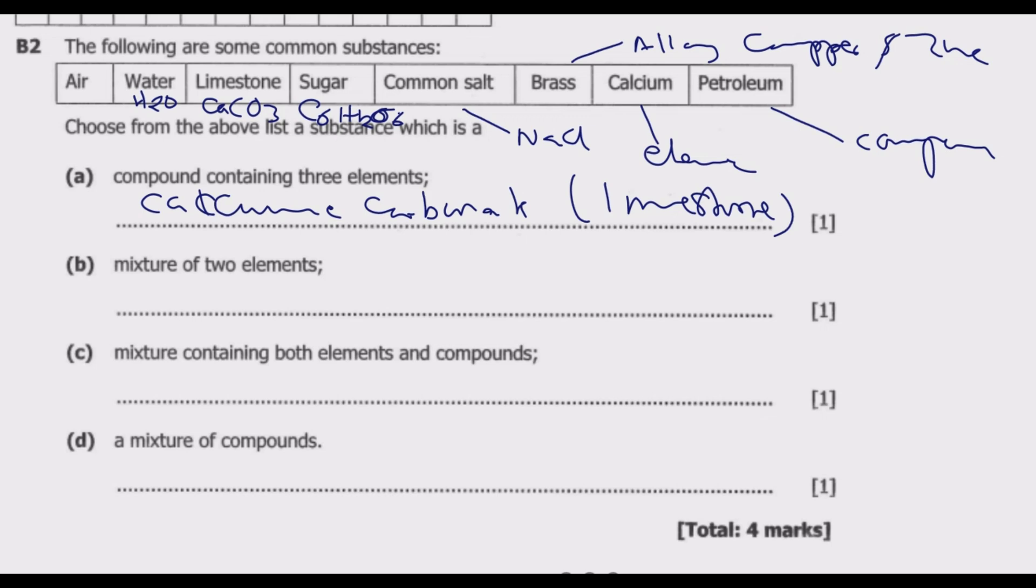We look at the mixture of two elements. So two elements are mixed but they are not chemically bonded. So this one would be basically brass which is an alloy. Remember an alloy is a mixture of two or more elements that are usually metals except for the case of carbon which is the case in steel.